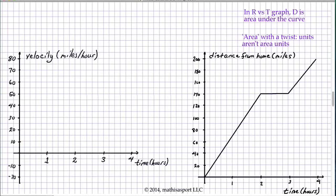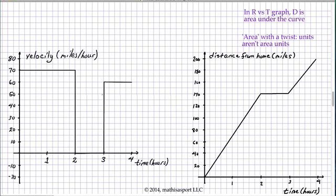Let's see what else we can learn by looking at the other two graphs we worked on. In the first one, we were moving at about 70 miles an hour, then came to a complete stop, then proceeded for the last hour at 60 miles an hour. In the velocity versus time graph, we go 70 miles an hour for the first two hours, then drop to zero velocity for an hour, then back up to 60 miles an hour for the last hour. The area under this curve tells us how far we've traveled.